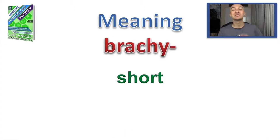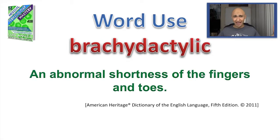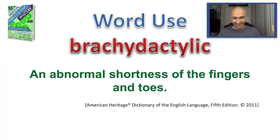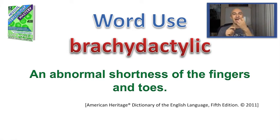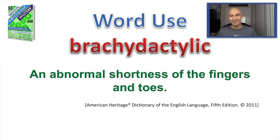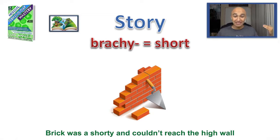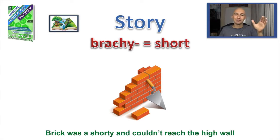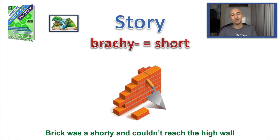Next one is brachy, which means short. A word used for that is brachydactylic — the definition is an abnormal shortness of the fingers and toes. My story is: brick was a shorty and couldn't reach the high wall. So brachy — brick — short. You can see how I played around with that to get the image or the story. Brachy was a shorty and couldn't reach the high wall. Visualize that.